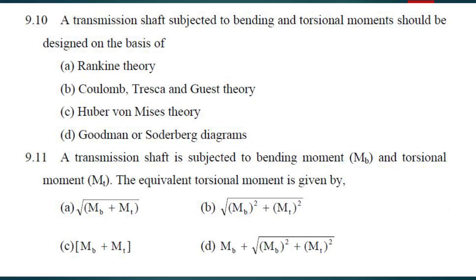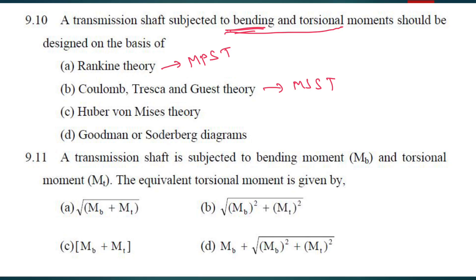A transmission shaft subjected to both bending and torsional moment should be designed on the basis of: if it is only bending, then you use Rankine theory or maximum principal stress theory. But here both bending and torsional moment are available. So you have to use Coulomb-Tresca-Guest theory, i.e., the maximum shear stress theory. B is your answer.